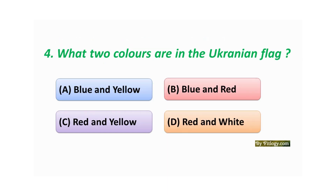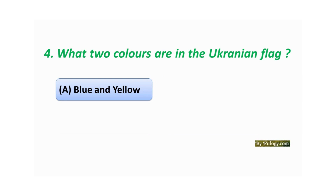Question number four: What two colors are in the Ukrainian flag? Option A: Blue and yellow. Option B: Blue and red. Option C: Red and yellow. Option D: Red and white. The correct answer is Option A: Blue and yellow.